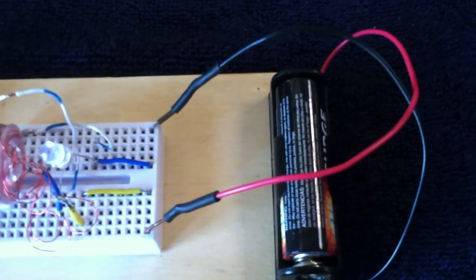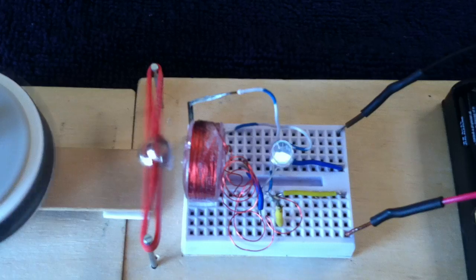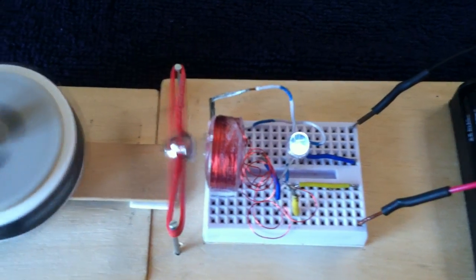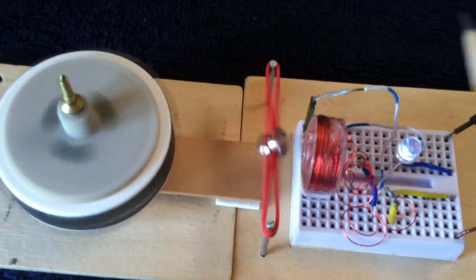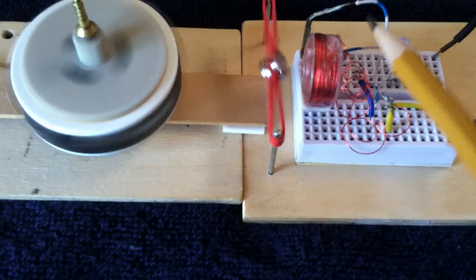It's making the LED go off of a 1.5 volt AA battery using the collapsing magnetic field of that coil being triggered by a magnet going back and forth in front of a reed switch. Right there.